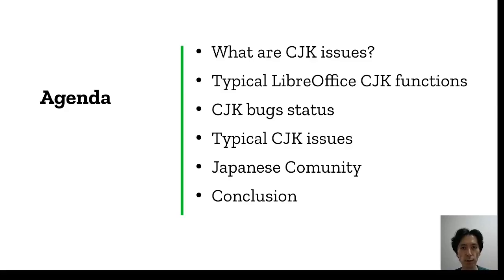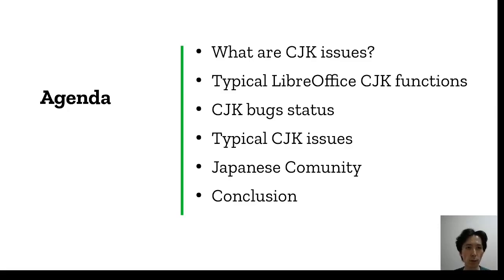This talk contains five topics: What are CJK issues? Typical review of CJK functions? CJK bug status? Typical CJK issues? And Reverse Committee and Conclusion.